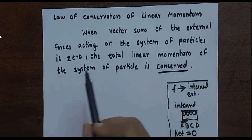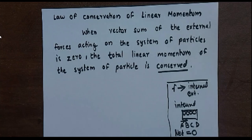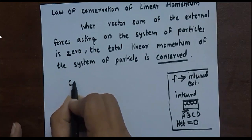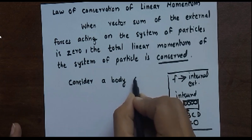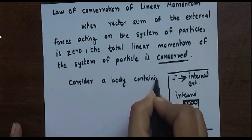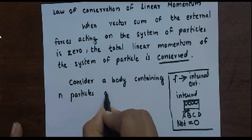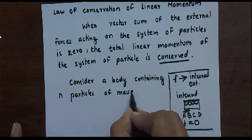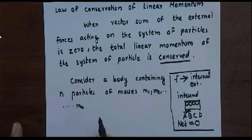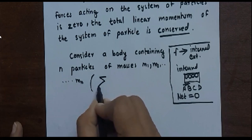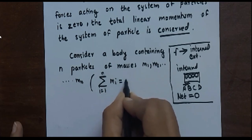Now, if the external force is zero, then in that condition the total linear momentum of the system is conserved — that we are going to prove. For that, we will consider a body containing n number of particles of masses m1, m2, ... mn. The summation from i equal to 1 to n of mi is equal to capital M, where capital M is the mass of the whole body.